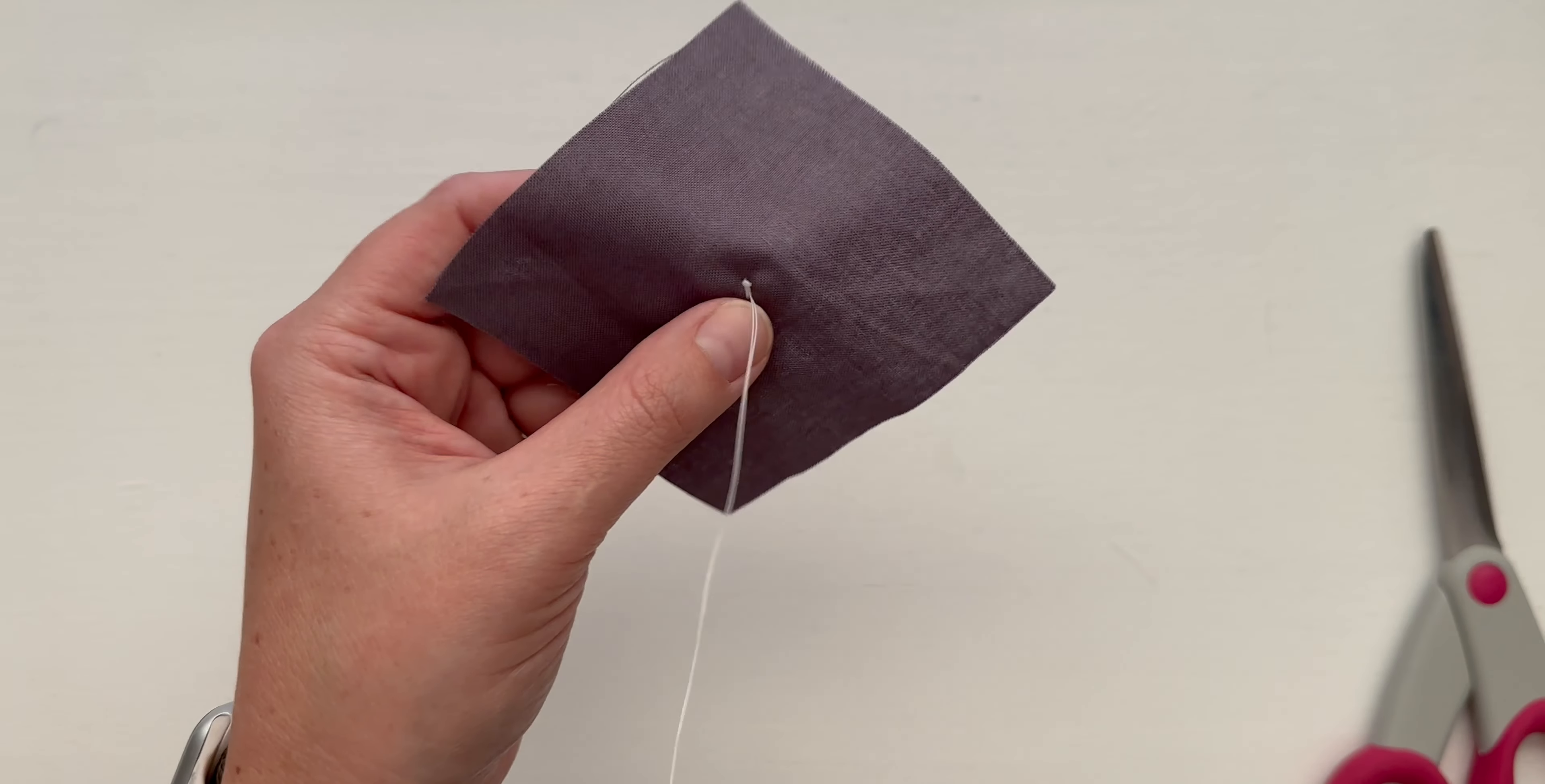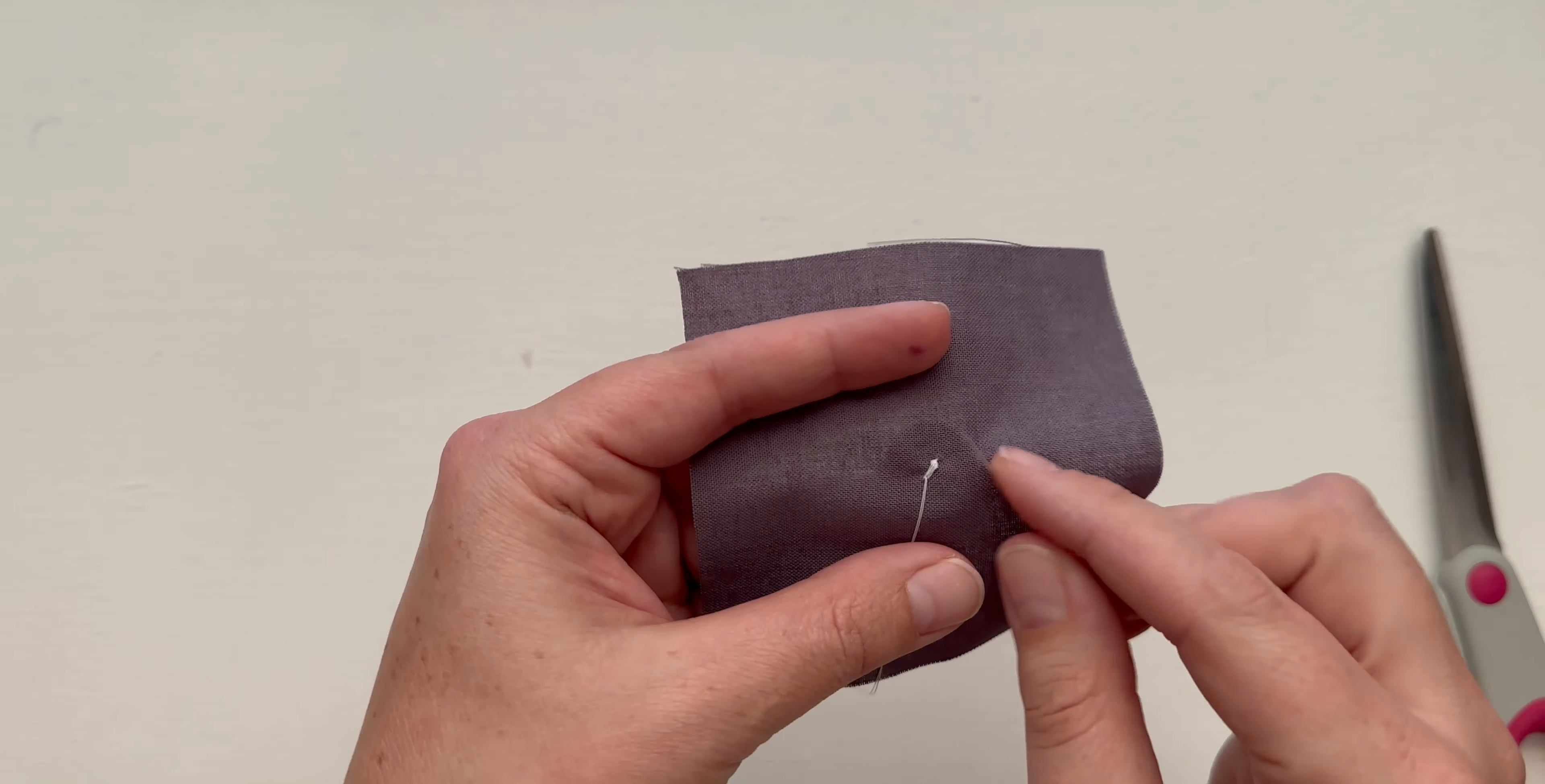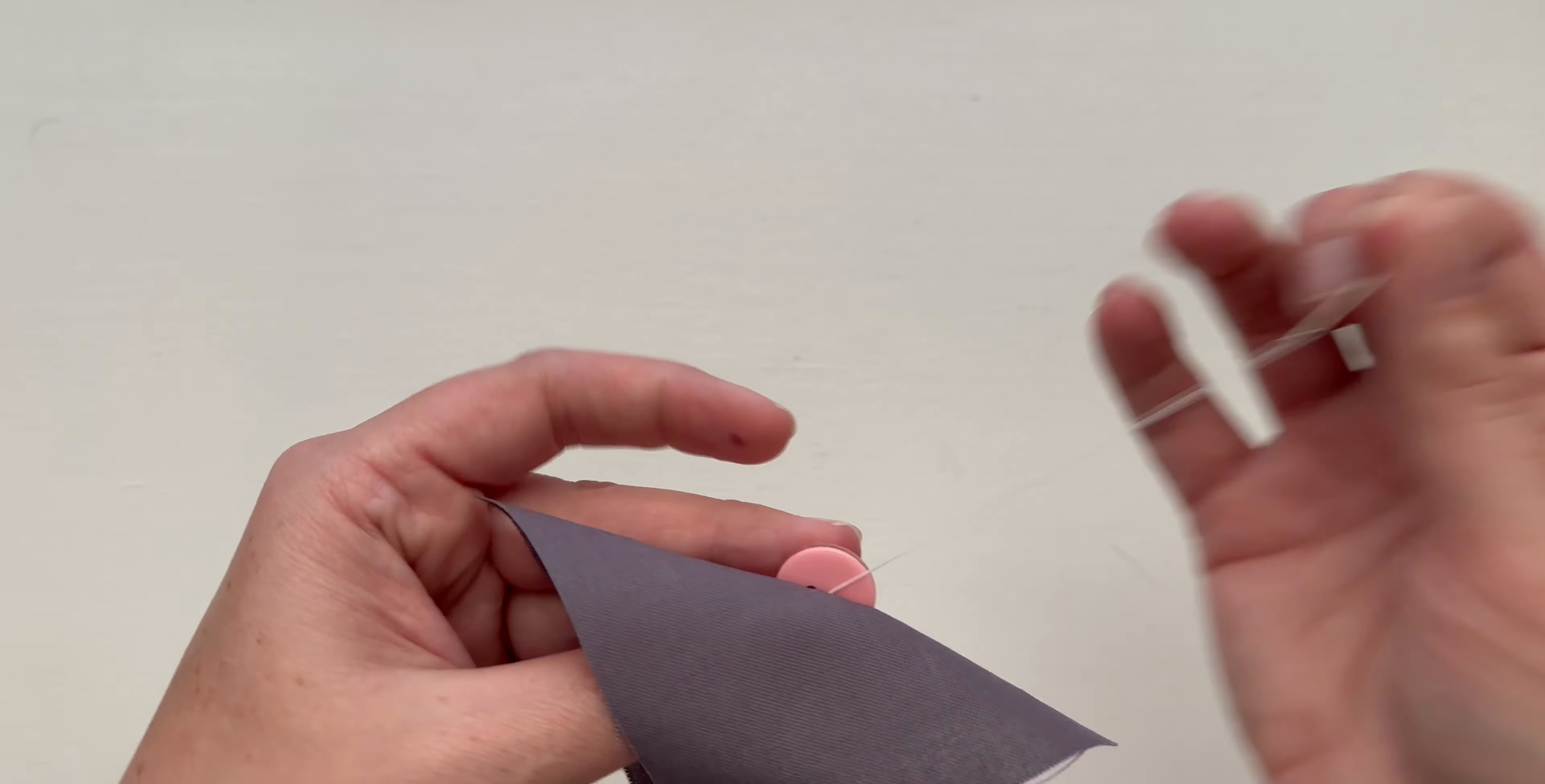So now I'm ready for step three, which is creating the thread shank. The thread shank is designed to create space underneath the button for when you've put your button through the buttonhole so that the fabric has a place to go. So what I'm going to do is I'm going to take my needle kind of close toward the center. I'm going to fold the fabric up so that I can send my needle through just through the fabric but not through the button. Once I'm happy with the placement I will pull it all the way through.